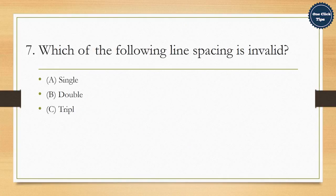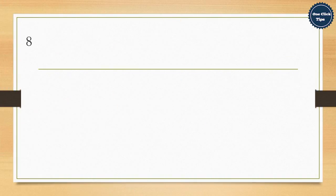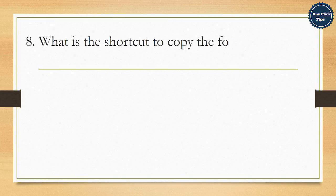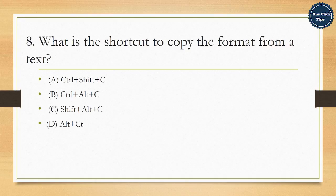7. Which of the following line spacing is invalid? A. Single, B. Double, C. Triple, D. Multiple. The correct answer is C. Triple. 8. What is the shortcut to copy the format from a text? A. Ctrl plus Shift plus C, B. Ctrl plus Alt plus C, C. Shift plus Alt plus C, D. Alt plus Ctrl plus F. The correct answer is A. Ctrl plus Shift plus C.